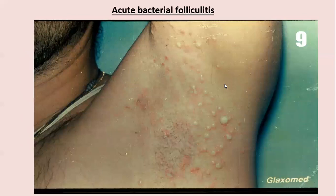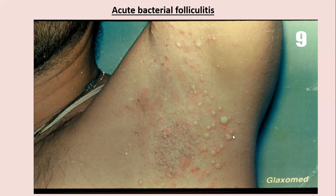This is how superficial folliculitis looks: there are many small pus-filled lesions called pustules, and some of them are surrounded by a red areola as well.